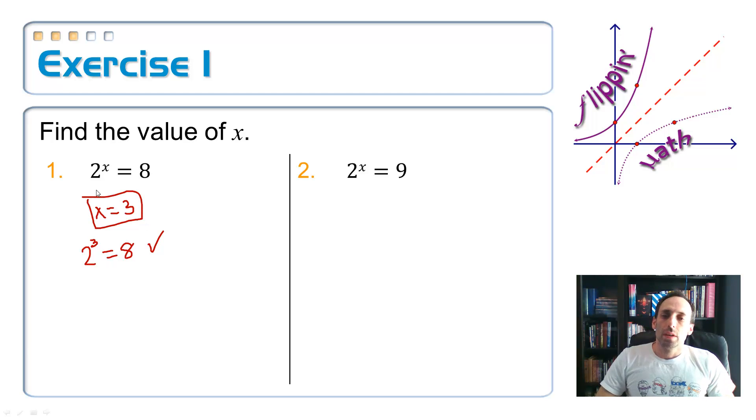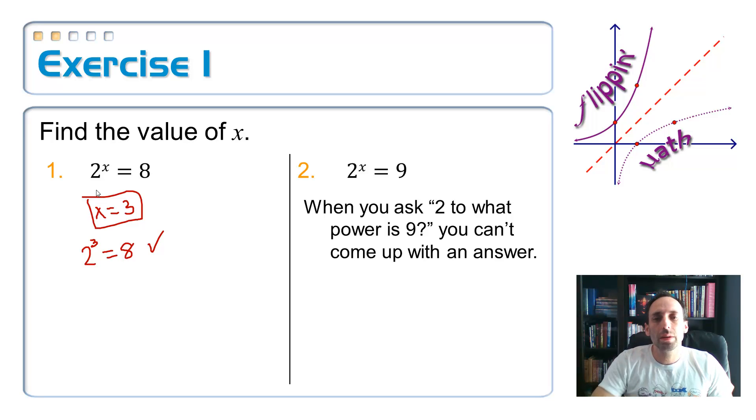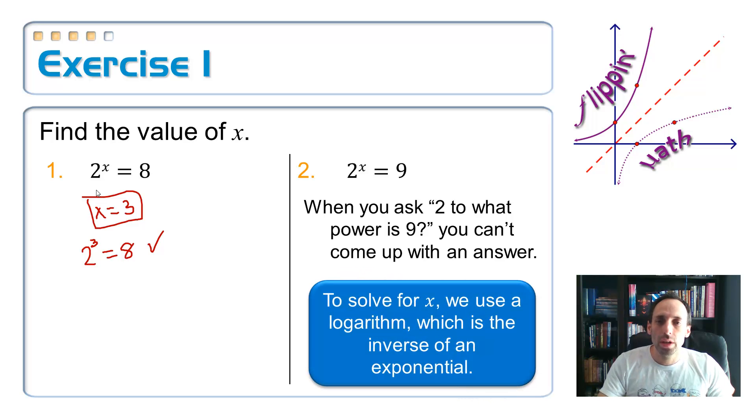But look over here at number 2. 2 to what power, 2 to the x power, is equal to 9? Well, that question's a little harder, because basically what you're asking is 2 to what power is equal to 9, but you can't come up with an answer. It's definitely not a whole number, right? Because 2 to the third is 8, and 2 to the fourth would be 16. So it's got to be in between those two things. So what we need in order to answer that question is this thing called a logarithm, which is the inverse of an exponential. Whenever I go to solve any algebraic equation, the way that I do it to get x by itself is I always undo what's there. I always do inverse operations. And so the inverse of an exponent would be a logarithm.